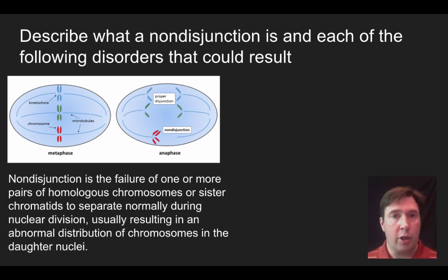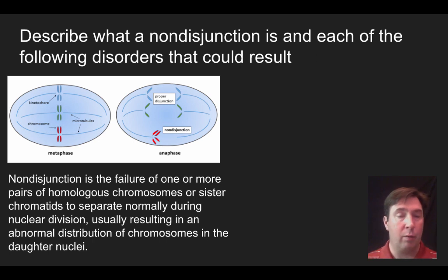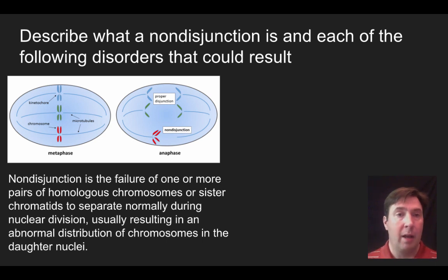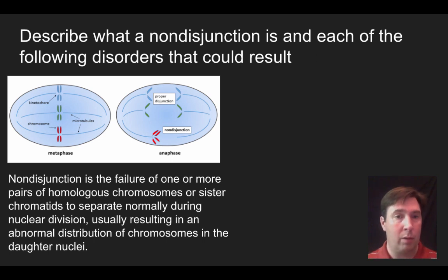Non-disjunction can happen during meiosis 1, where homologous chromosomes get pulled to one side — leading to half the daughter cells having an extra chromosome and half having too few. In humans, that means 47 chromosomes in two gametes and 45 in the others. Or it can happen in meiosis 2, producing two gametes with the normal 46 chromosomes and two with abnormal numbers — one too many and one too few.